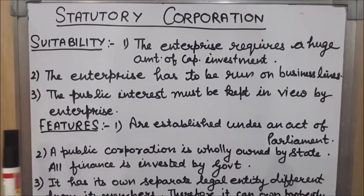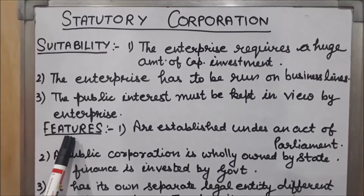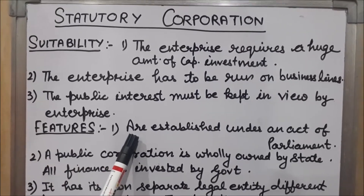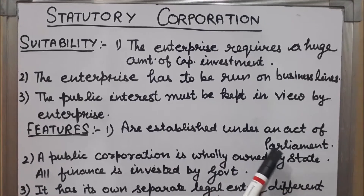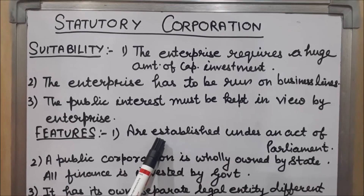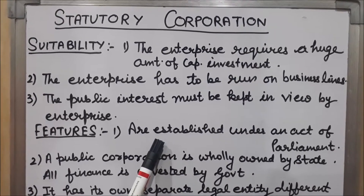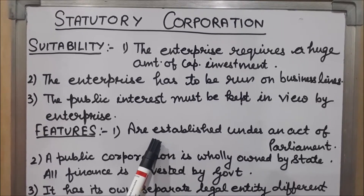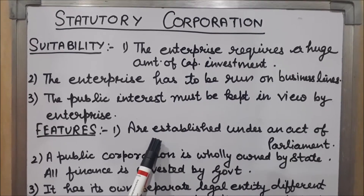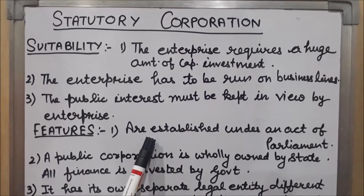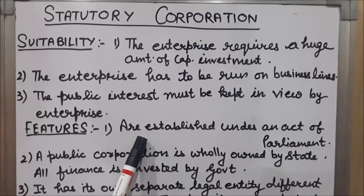Now I will discuss the features of statutory corporations. The first feature is that statutory corporations are established under an act of parliament. They are formed by passing a special act in the parliament. This act defines the objectives, powers, rules, and regulations, as well as the relationship of the statutory corporation with different departments of government.